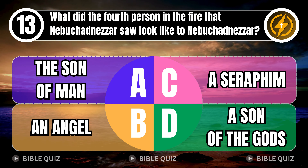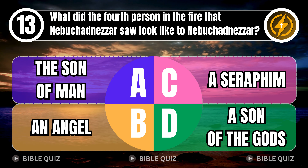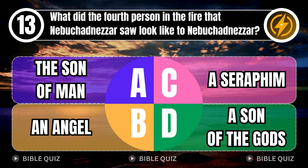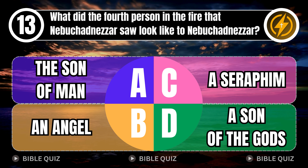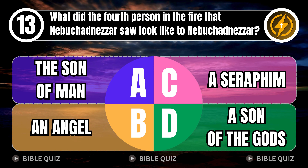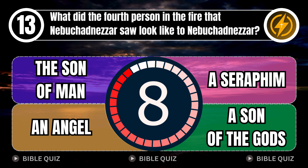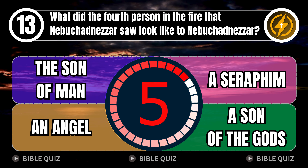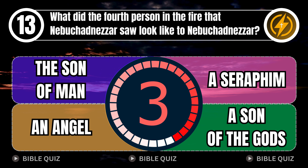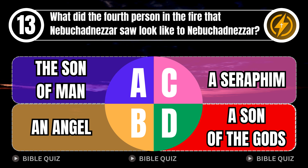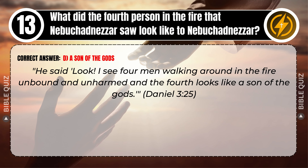Question 13: What did the fourth person in the fire that Nebuchadnezzar saw look like? A. The son of man. B. An angel. C. A seraphim. D. A son of the gods. Correct answer: D. A son of the gods. Explaining the Bible — he said, 'Look! I see four men walking around in the fire, unbound and unharmed, and the fourth looks like a son of the gods.' Daniel 3 verse 25.